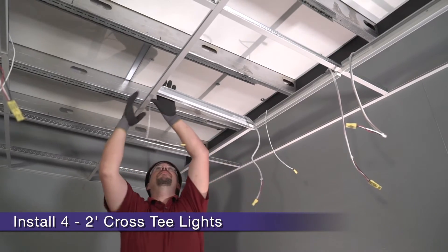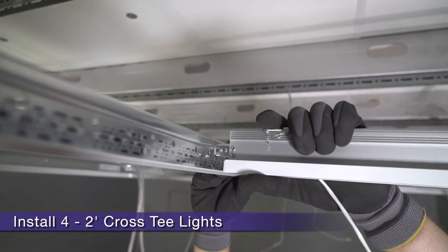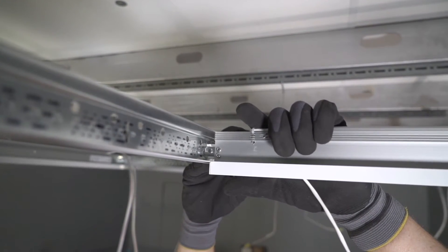After the 4L T's are installed, we just need to fill in the square LED layout with four two-foot LED cross T's. Again, notice how easily they stab into place.